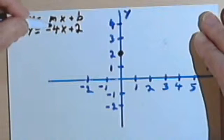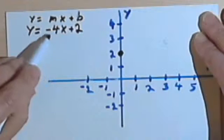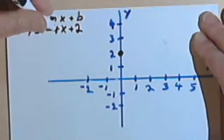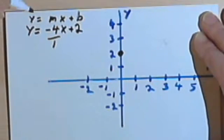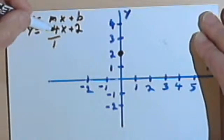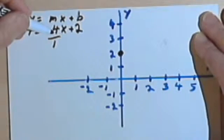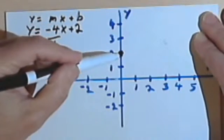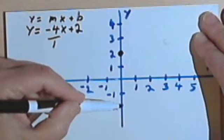We also know the slope, which is the number before the x, the coefficient of the x, is negative 4. Now, this doesn't look like a fraction, but remember, any whole number can be written as the number over 1. So now I have rise and run. My rise is negative 4, which means I'm going down 4. So starting from the y-intercept, I go down 1, 2, 3, 4.